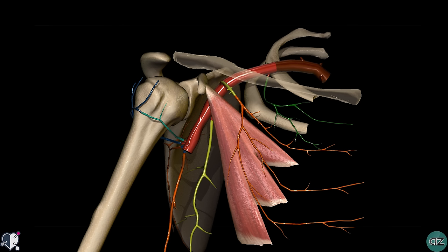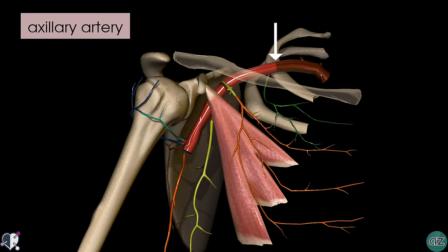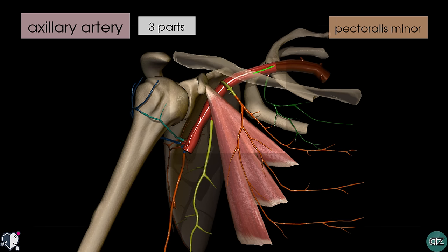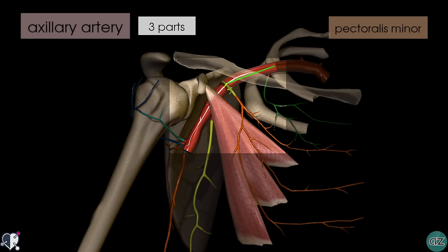We're now looking at an isolated view of the axillary artery and its branches. You can see the subclavian artery crossing the lateral border of the first rib to become the axillary artery. I've left the pectoralis minor muscle on, which you can see originating on the coracoid process of the scapula. It runs in front of the axillary artery and divides it into three parts. The first part lies proximal to the pectoralis minor, the second part lies underneath it, and the third part lies distal to it.